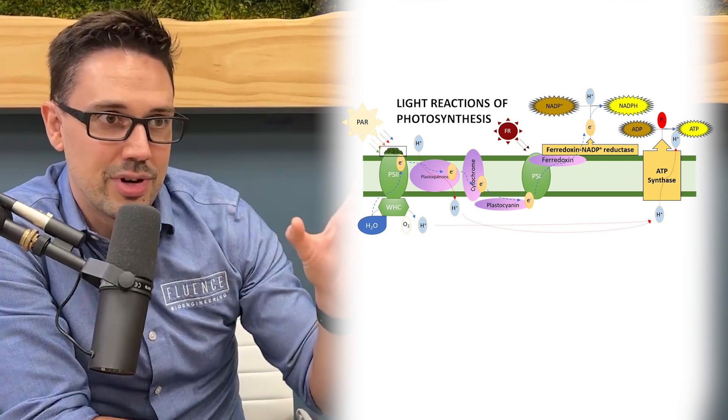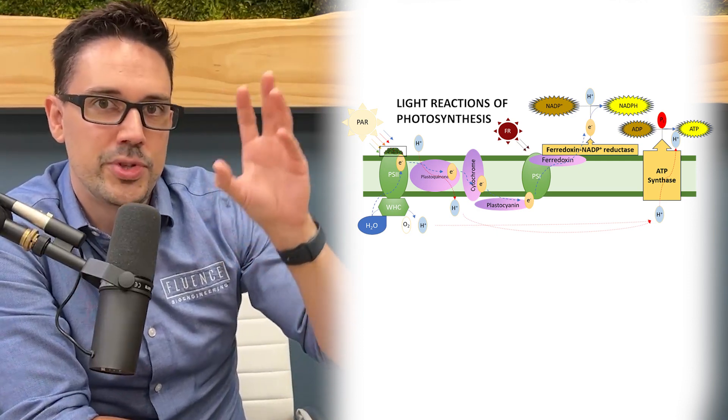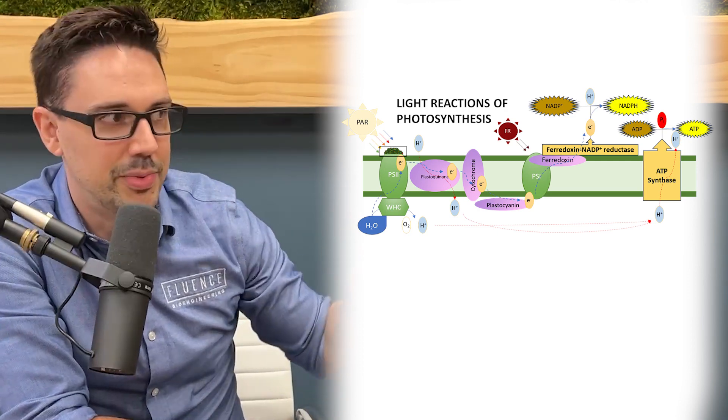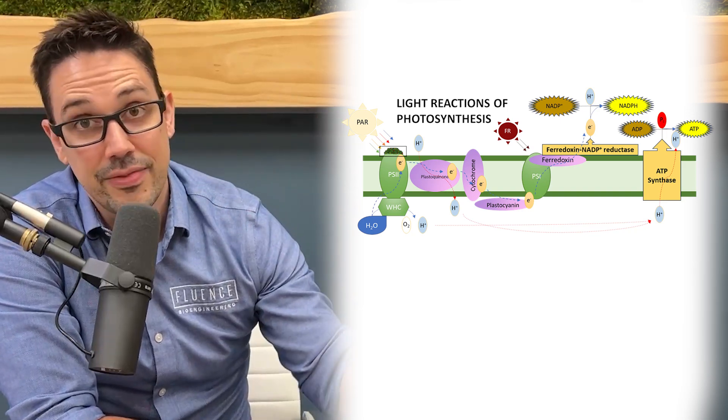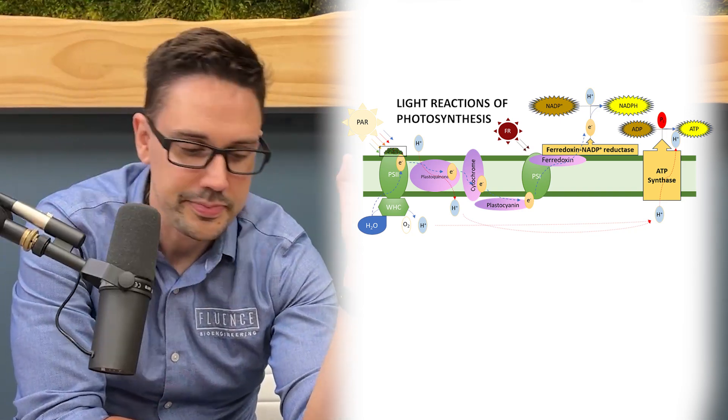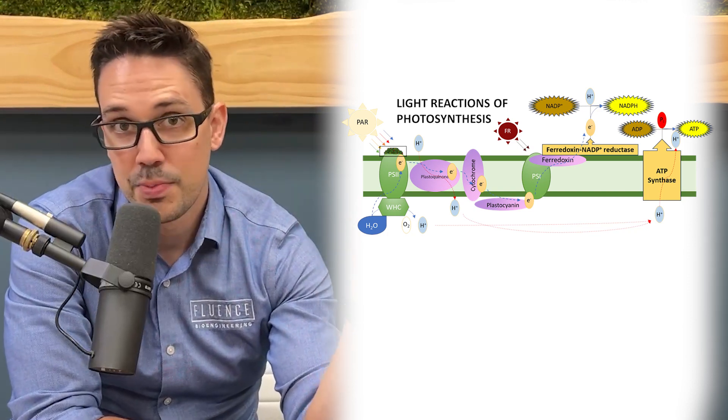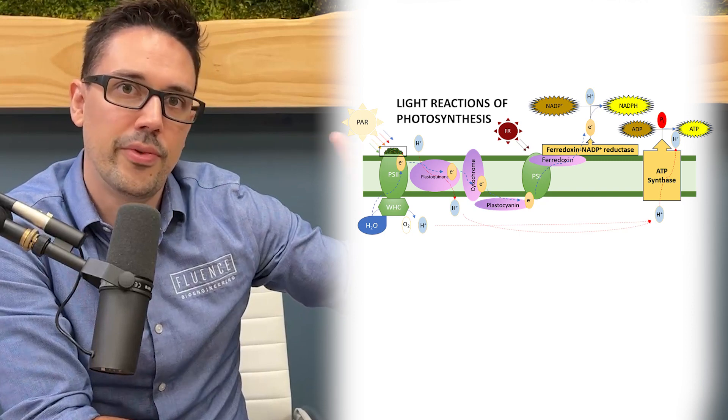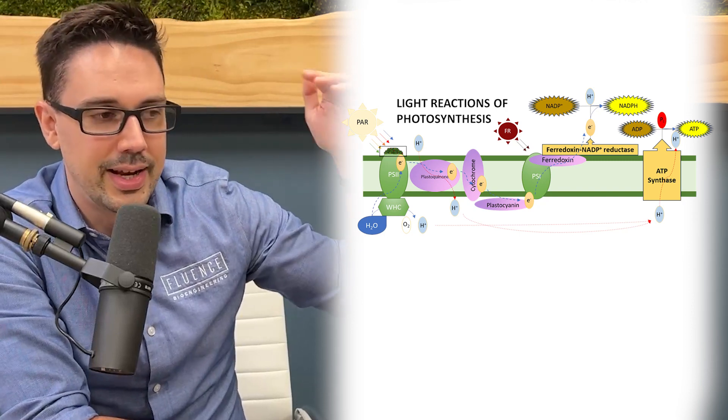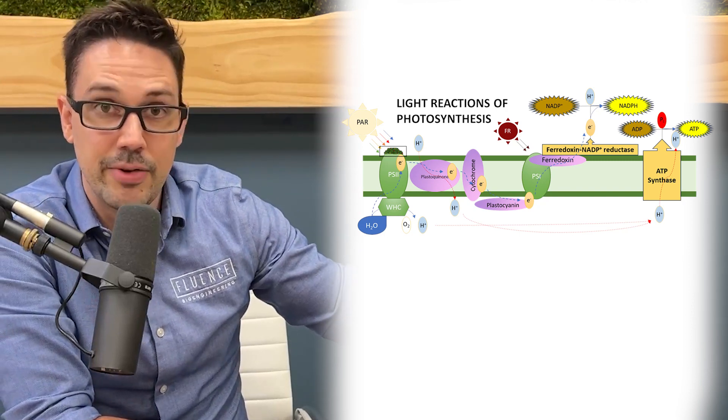This electron moves from Photosystem II to a couple of intermediates that you'll probably see in a graphic right here, and it arrives at Photosystem I. At this point, the electron moves through Photosystem I to an enzyme called ferredoxin NADP reductase.